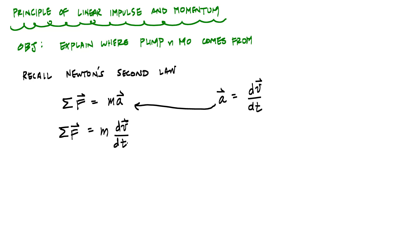And then when I rearrange some of the terms or I multiply both sides by dt, then this is m dv like so.